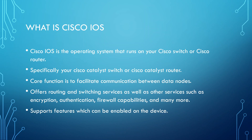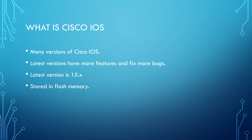As network engineers, our job is to configure our network devices and enable these features to facilitate network communication. It's important to understand that there are many versions of Cisco IOS. Likewise with Windows or Linux, newer versions are going to have more features, be slicker, faster, etc. The latest version is 15-something — I think it's 15.8. Each newer release of Cisco IOS brings more features and fixes bugs from previous versions. The Cisco IOS is stored in flash memory, so every time the router or switch boots up it loads the operating system onto the device.